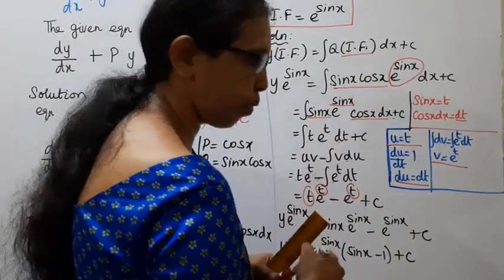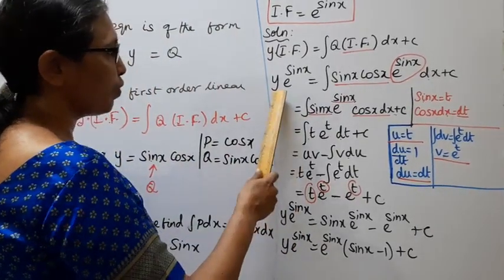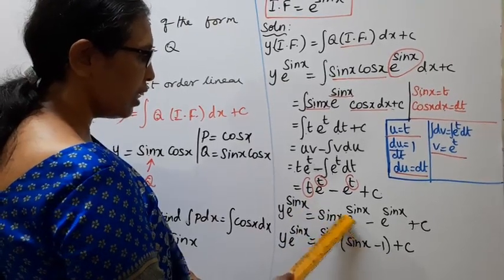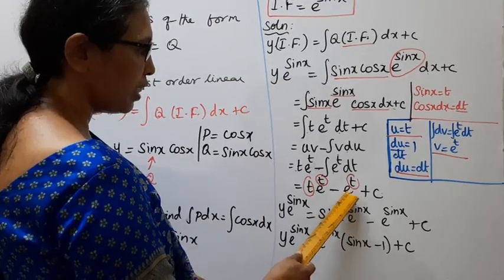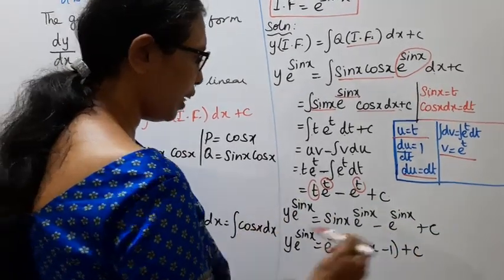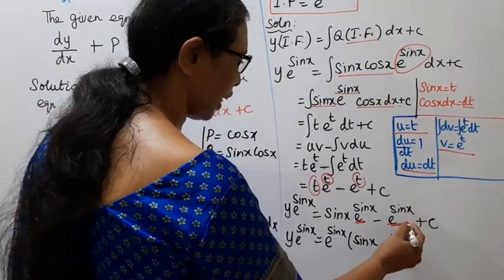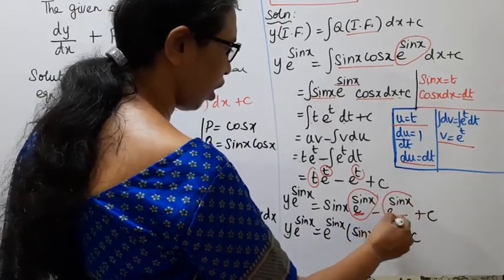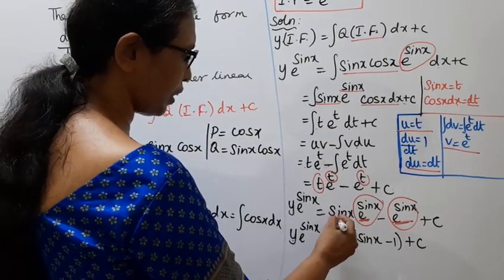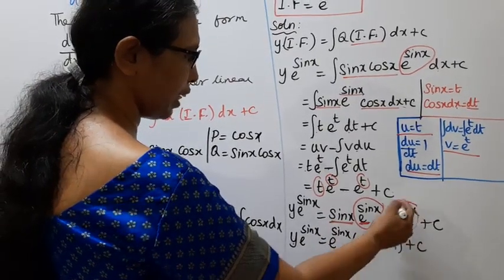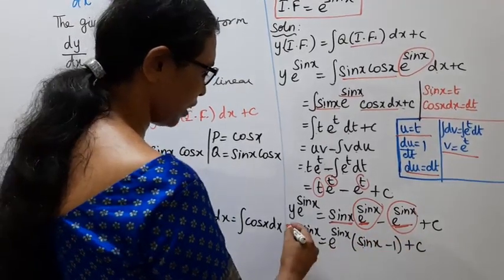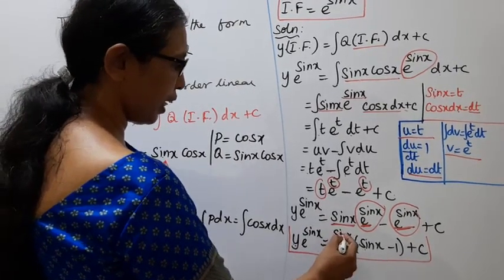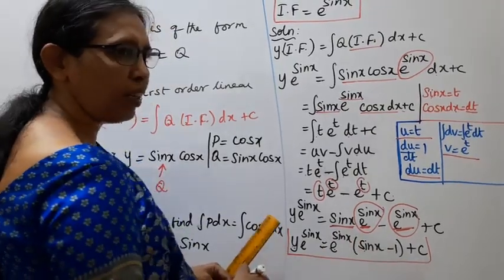Now substituting back sin(x) for t on the left-hand side: y·e^(sin x) = e^(sin x)·sin(x) − e^(sin x) + c. This is the solution.